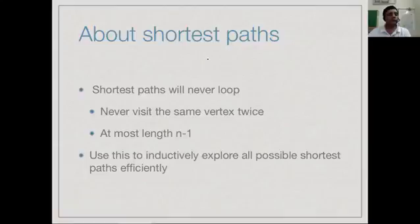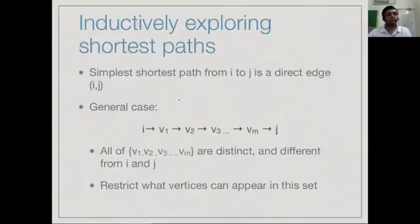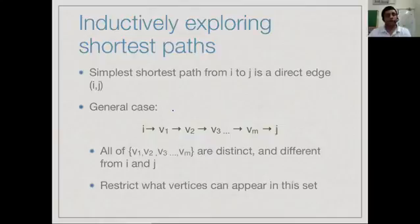We will come up with an inductive solution for how to build up the shortest paths — building them up in terms of which vertices we allow in between. The simplest shortest path you can imagine between a pair of vertices is just a single edge.